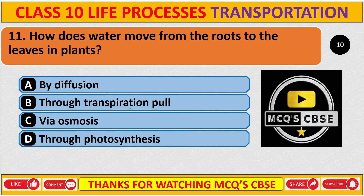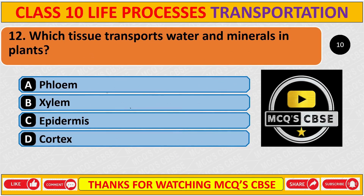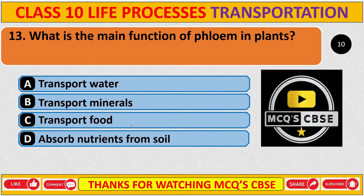How does water move from the roots to the leaves in plants? The correct answer is B: transpiration pull. Which tissue transports water and minerals in plants? The correct answer is B: xylem. What is the main function of phloem in plants? The correct answer is C: transport food.